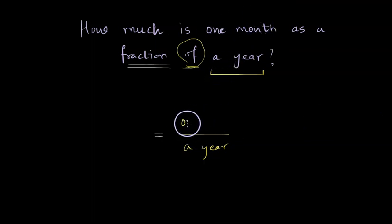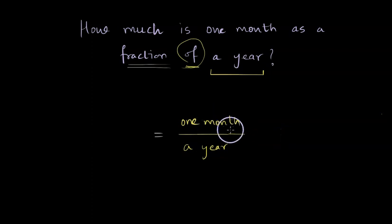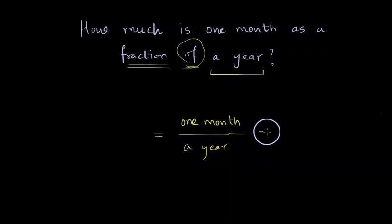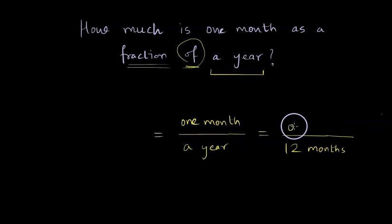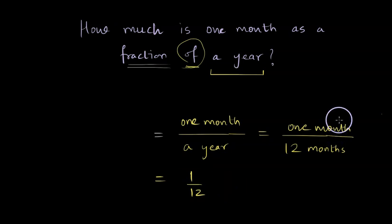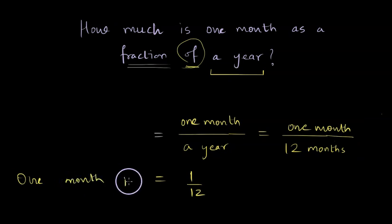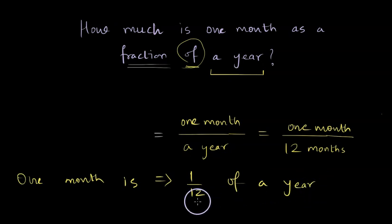So we have one month in the numerator. We need to convert these words into quantities. In the denominator we have a year, and we know a year is composed of 12 months. So we can write one month divided by 12 months, which gives us 1 over 12. One month is 1/12 of a year — that's our answer.